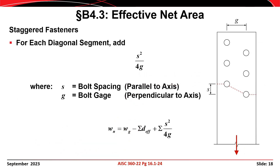When holes are offset or staggered, it is sometimes necessary to investigate fracture paths with diagonal segments. In those cases, the net area is determined by deducting the sum of the effective hole diameters from the gross width and then adding the quantity s² / 4g for each diagonal segment in the chain, where s is the spacing measured parallel to the axis of the member and g is the gauge measured perpendicular to the axis.